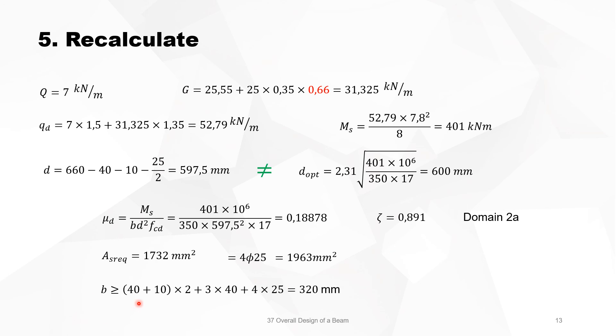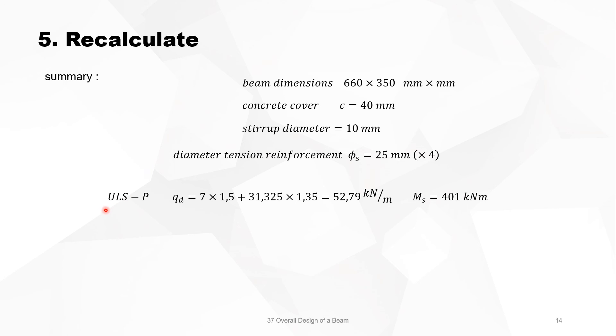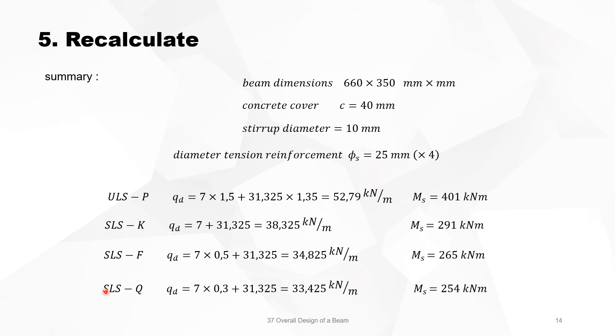And we check the width. The width should be at least 320 and we have 350, so the width is okay. So the summary, the beam dimensions are 660 times 350, the concrete cover C is 40 millimeters, the stirrup diameter is 10 millimeters, and the tension reinforcement is 4 diameters 25. The load in ULS is 401 kNm, in SLS-K it's 291 kNm, in SLS-F it's 265 kNm, and in SLS-Q it's 254 kNm.